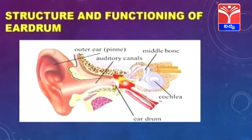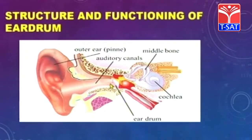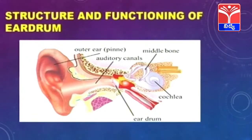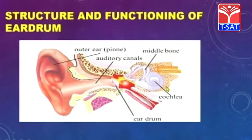These vibrations are going to strike our eardrum. The eardrum is just like a stretched balloon. It vibrates when the sound enters and strikes the eardrum. From here, the sound vibrations are carried to the internal part of the ear called the cochlea, and from there they are transmitted to the brain through different nerves.